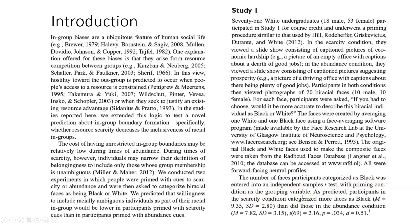The faces were created by averaging one white and one black face using face averaging software — so they weren't literally biracial individuals; a computer algorithm combined pictures into a single composite person. The number of faces participants categorized as black was entered into an independent samples t-test with priming condition as the grouping variable. The two groups — the priming condition grouping variable — were scarcity versus abundance.